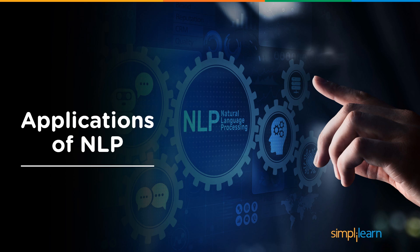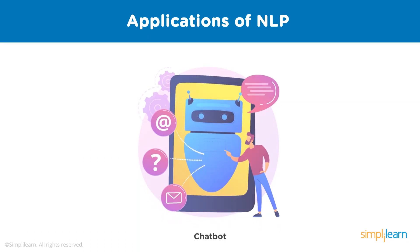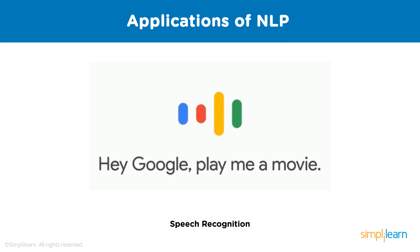Now let's look at some real-world applications of NLP. One application is in chatbots. Chatbots can help you solve issues while performing natural language generation — in other words, they can hold a conversation in plain English. A chatbot is a software application used to conduct an online chat conversation via text or speech, in place of a live human agent. Many companies also use WhatsApp chatbots to make the process seem less mechanical.